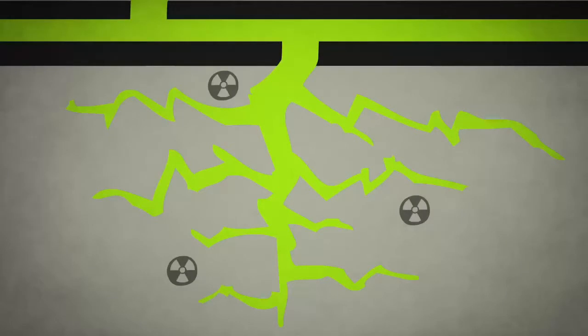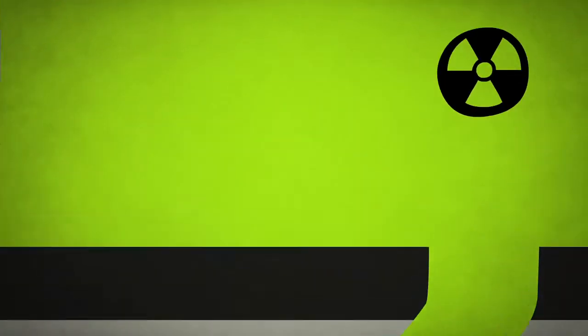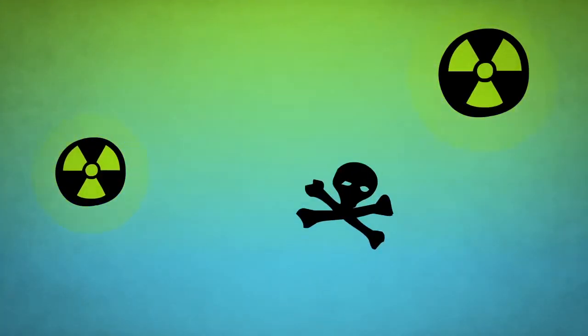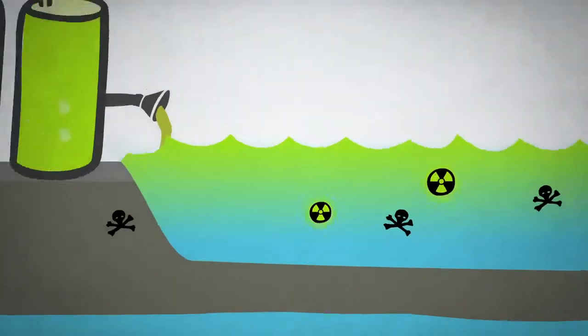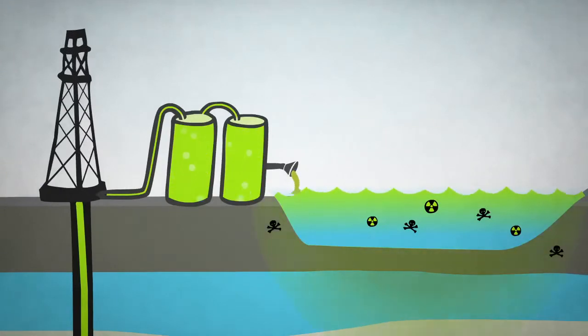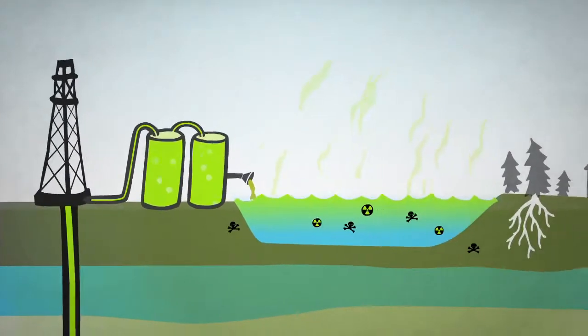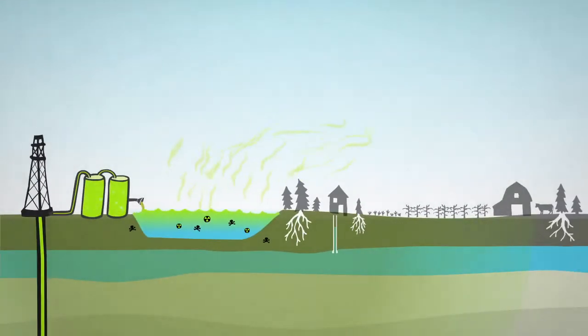Add to this the radioactive elements and heavy metals, which are dislodged from deep underground and carried to the surface by the fracking process. The result is toxic radioactive waste fluid, a serious threat to people's health, especially local residents. So what happens to it all?